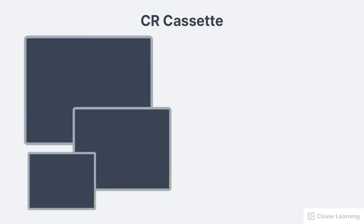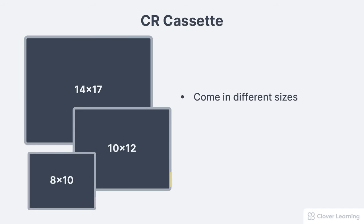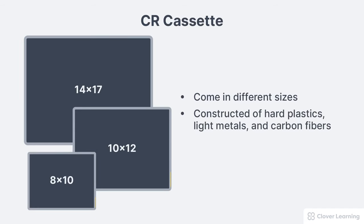These cassettes can come in different sizes and are typically constructed of hard plastics, light metals, and carbon fibers. The outer protective cassette only serves as a protective barrier and has no bearing on image production.